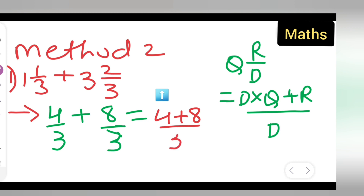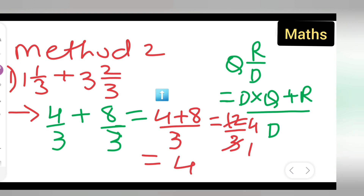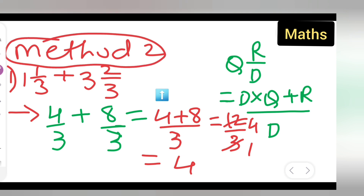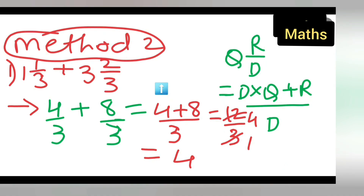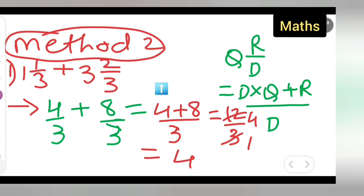Since the denominators are the same, add the numerators: four plus eight gives twelve-upon-three. Cancelling, twelve divided by three equals four. So the answer is four. That was Method 2. See which method is easier for you. Thanks for watching — don't forget to like, share, and subscribe for more such problems.